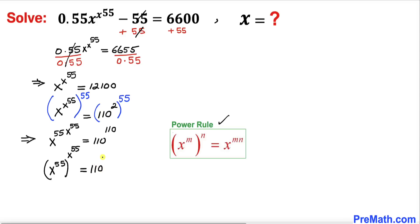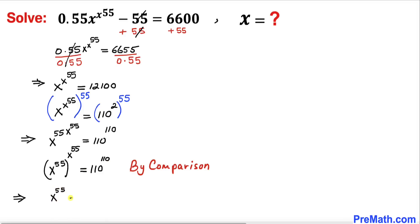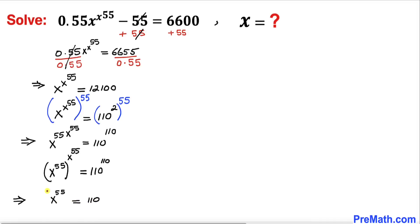Now we have this pattern: this base to the power this equals this base to the power this on the right hand side. So by comparison we can write x to the power 55 equals 110. Now we want to isolate x, so I am going to take a power of 1 over 55 on both sides.